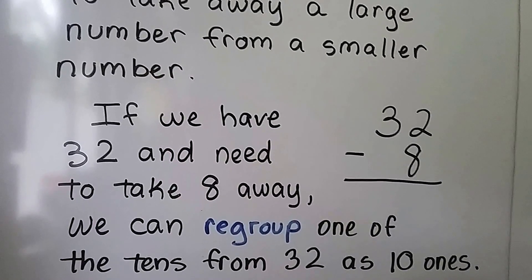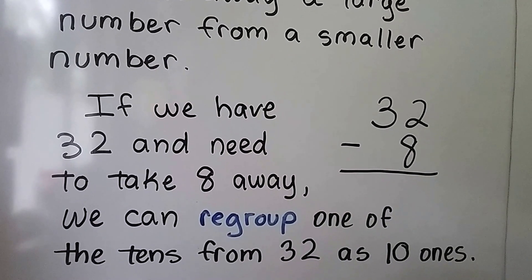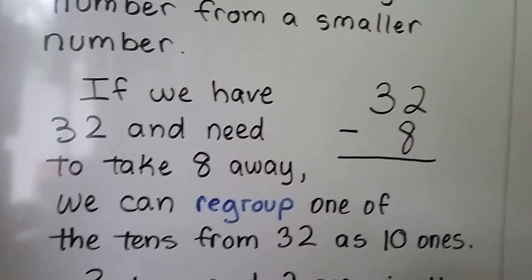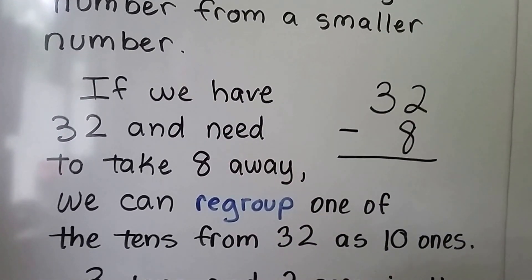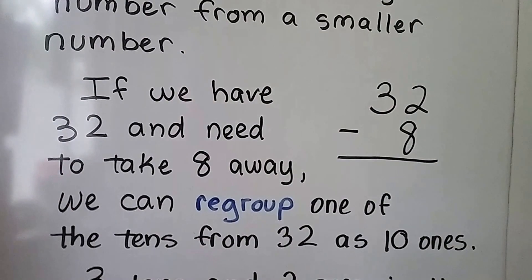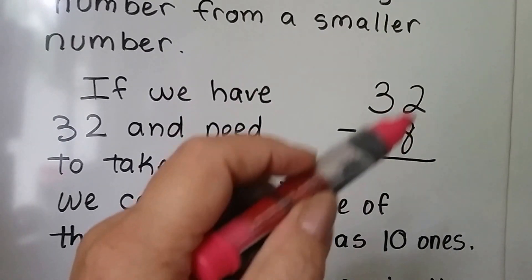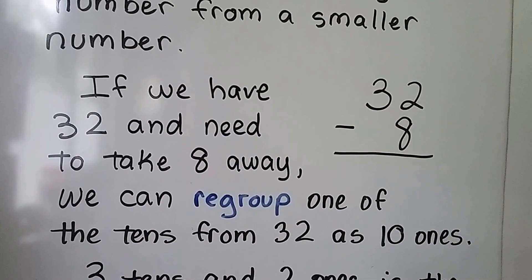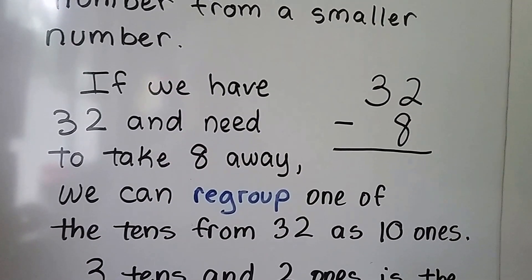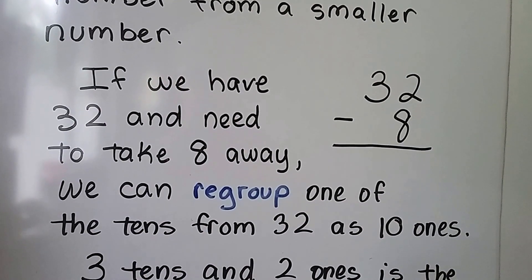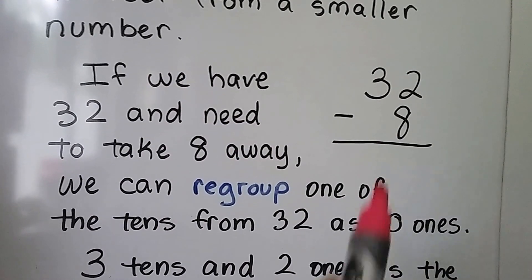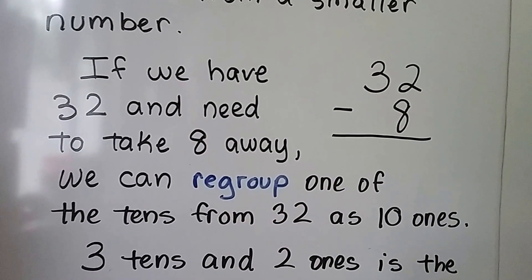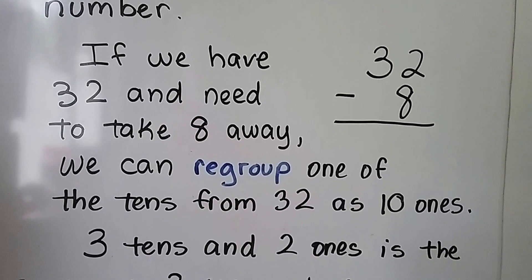Like here. If we have 32 and need to take 8 away, and we look in the ones place, we have 2 and we need to take away 8. Well, we can regroup one of the tens as 10 ones.